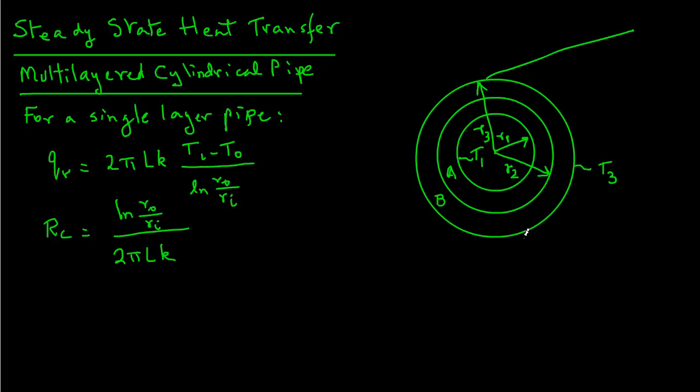So what we will do is draw our thermal resistance circuit. And that circuit will begin right here. And the temperature is T1. It will end at temperature T3. And we of course have the inside wall.